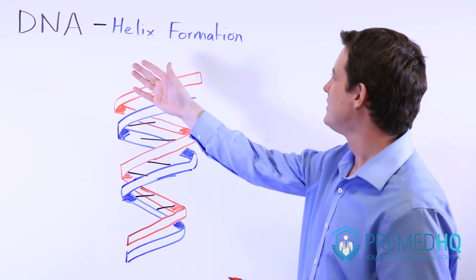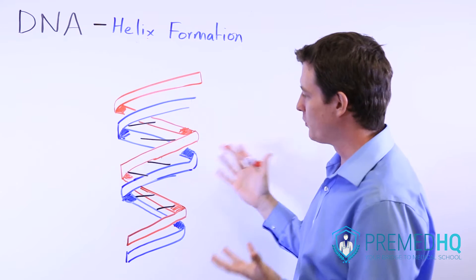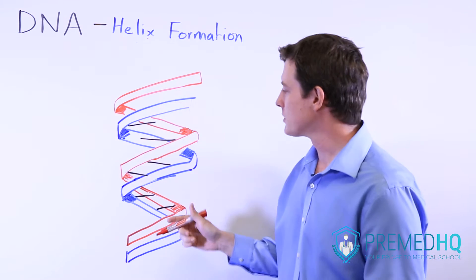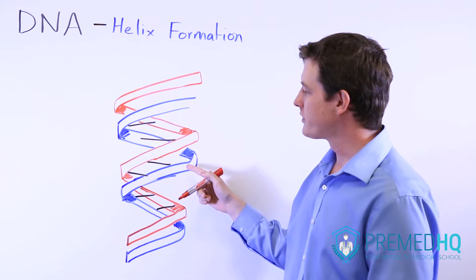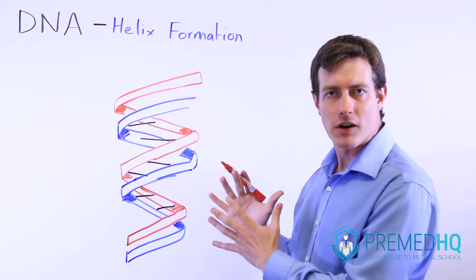Here we have the famous double helix shape that you're probably familiar with when you discuss DNA. And the helix essentially forms whenever you have one strand and its complementary strand that are base pairing with each other.